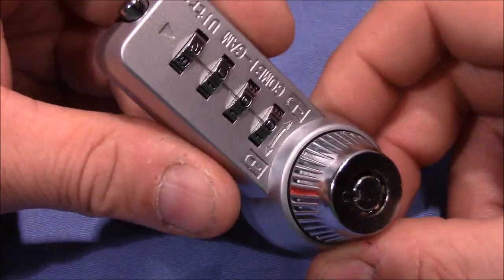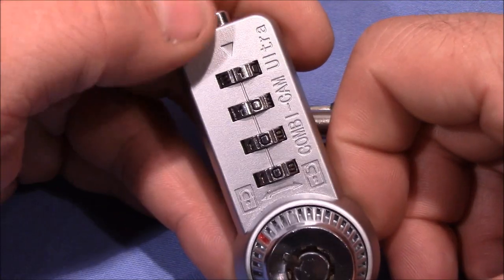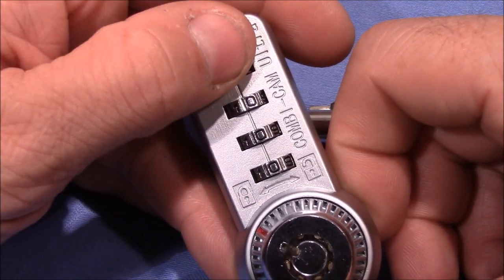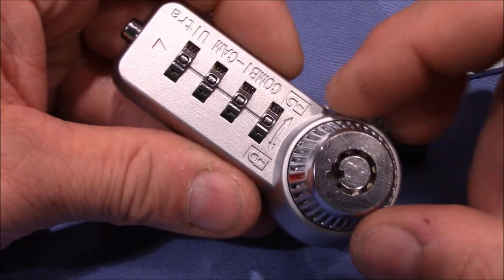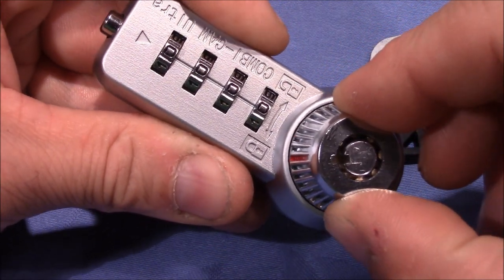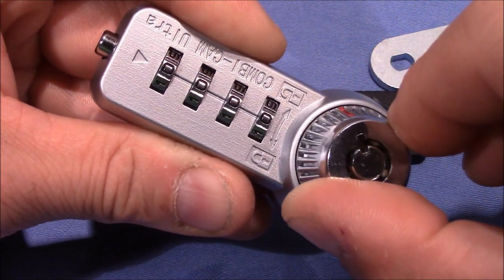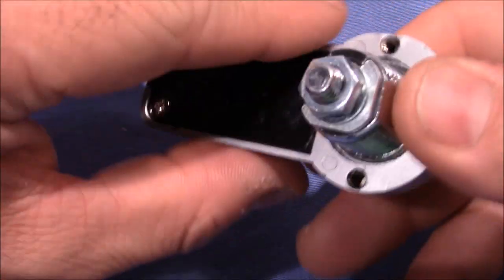Let's focus on the combination part first. Currently I have entered the right code and this means I can now turn the knob from the locked to the unlocked position.